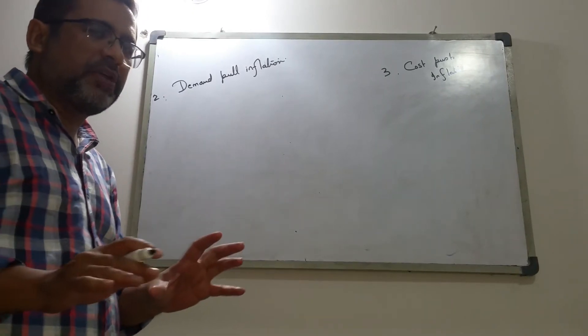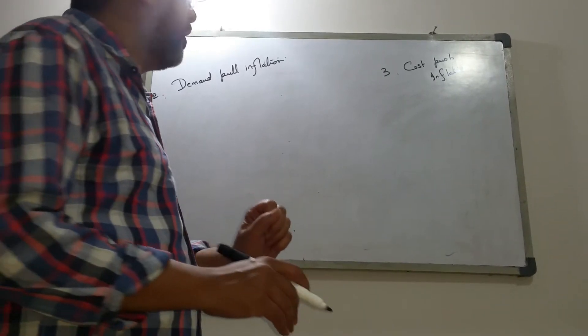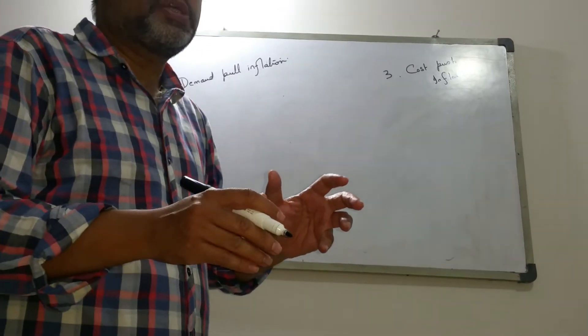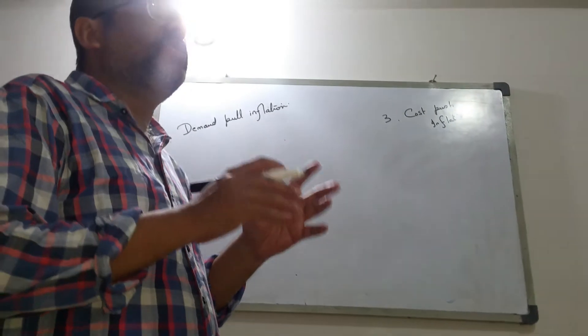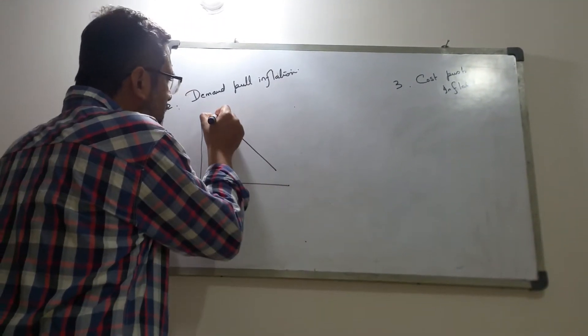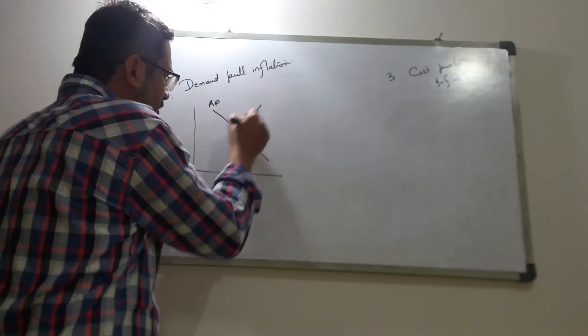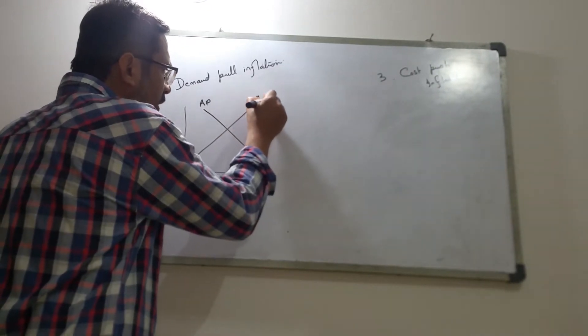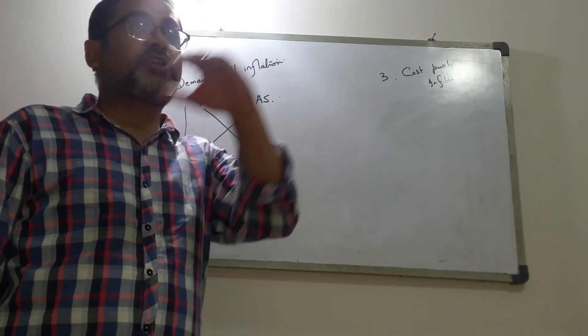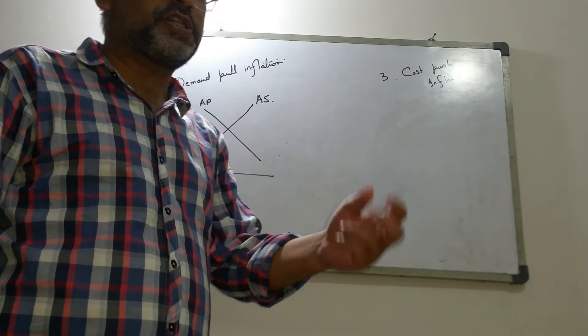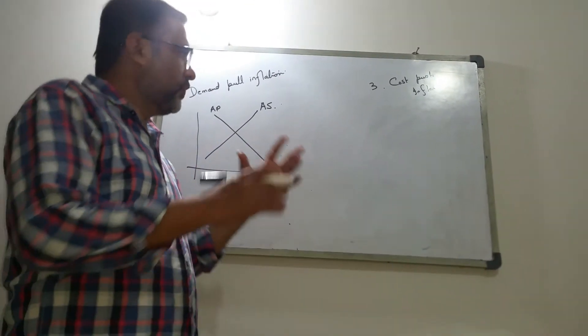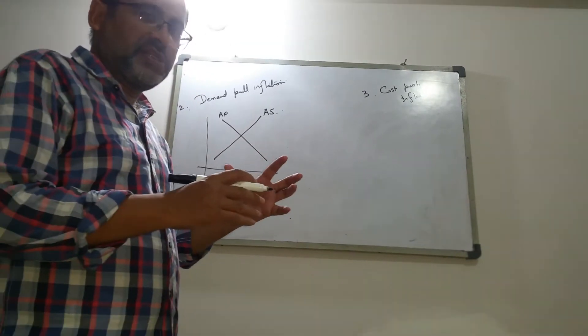So this approach was developed by the Keynesians. The Keynesians of course talk about two forces in the macro economy, and those forces are the forces of aggregate demand and aggregate supply. Just as there is demand and supply of a product in the general economy, there are two forces: the forces of aggregate demand and the forces of aggregate supply. So what are the Keynesians saying?